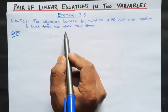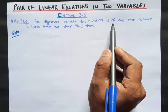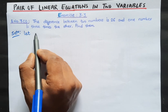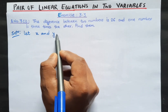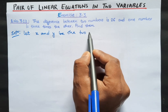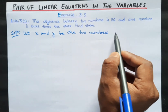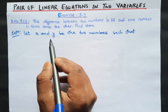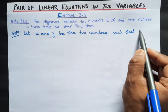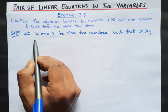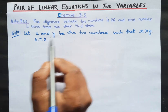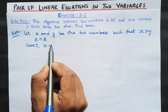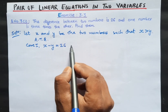We have two numbers such that their difference is 26, and one of the numbers is three times the other. We have to find those two numbers. Let x and y be the two numbers, such that their difference is 26. One of the numbers should be greater than the other, so let x be greater than y. According to the question, case 1: the difference between two numbers is 26, that means x minus y is equal to 26. This is our equation number 1.